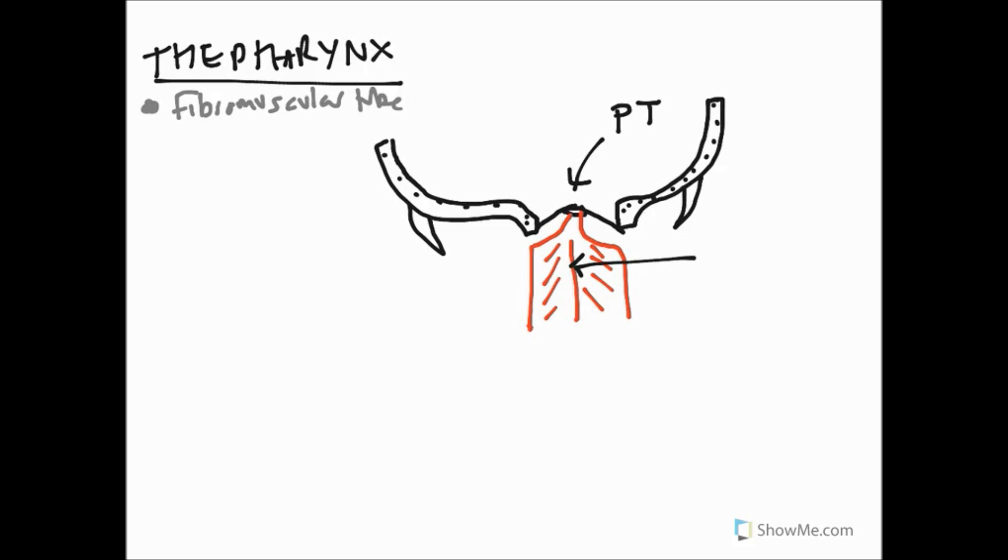And this midline tendinous strip is often referred to as the pharyngeal raphe. A raphe is where two muscles on either side often join on a tendinous strip and that often seals in some strength for the muscles and some integrity to the overall structure. In this example it's creating a tube, and so our superior constrictor is in here and we can label that as SC.